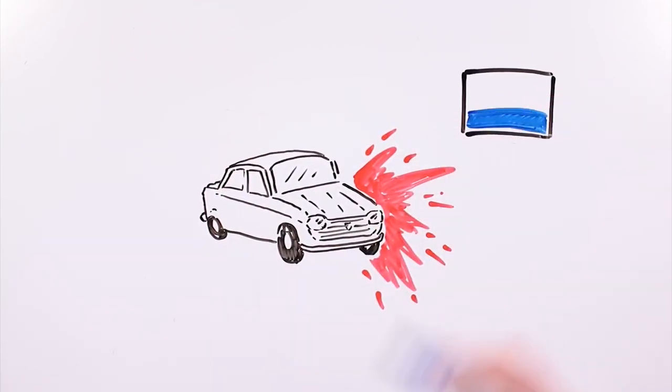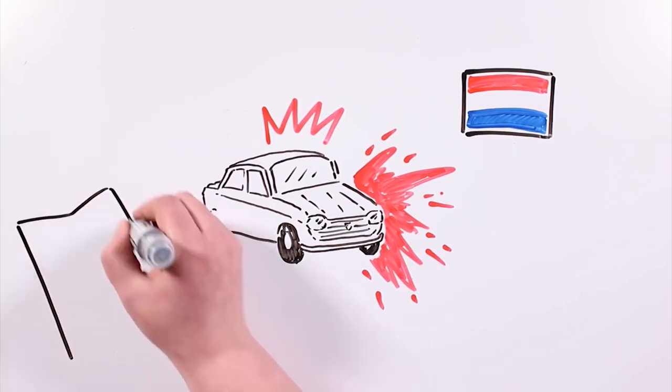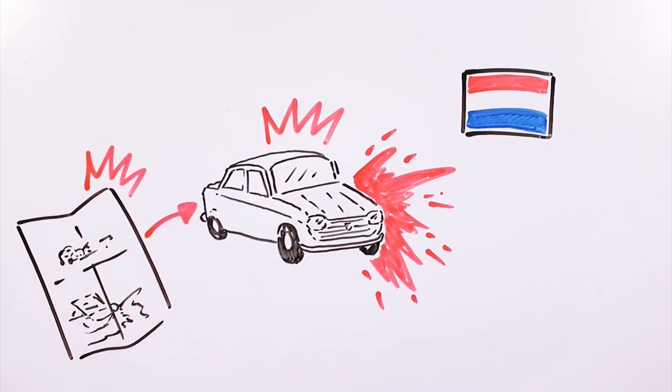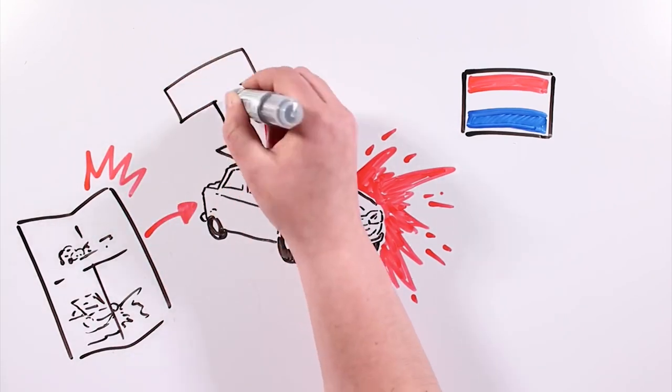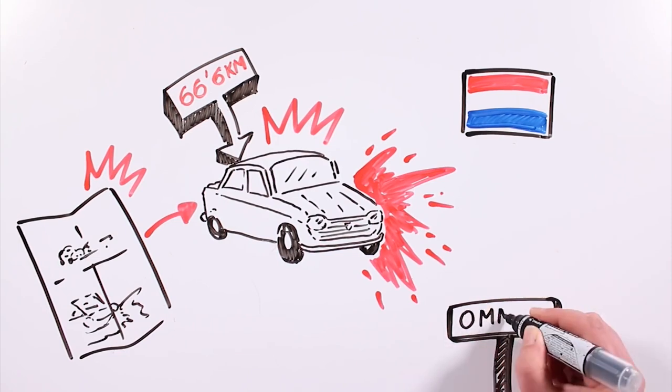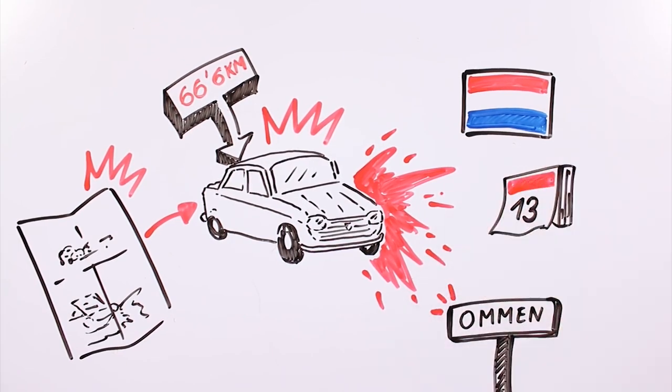Months later he suffered a car accident in the Netherlands in which his wife died. Coincidentally, he himself had designed a very similar death scene in the film. In addition, the accident happened exactly 66.6 kilometers from a small town called Omen on the date of Friday the 13th.